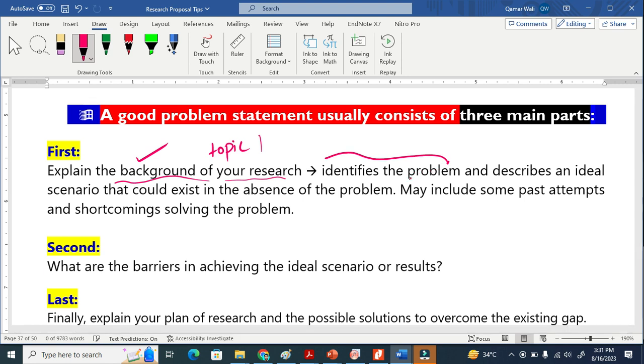And you have to describe that in the absence of this problem, what the ideal scenario will look like. In the absence of that problem, what the ideal scenario will look like. And you also include some past attempts or shortcomings solving the problem.